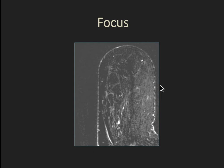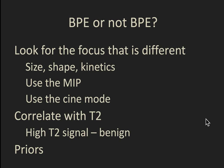Here's a patient who has relatively low BPE — just a few things, these are vessels — and they have this one focus of enhancement. When asking BPE or not BPE, look for the focus that is different on the basis of its size, something about its shape, or kinetics. Use the MIP images — they can be very helpful. Use cine mode, going through multiple slices to get a feel of the lay of the land. Correlate it with T2 signal; high T2 signal in a focus I'm probably going to call benign. And obviously look at priors.